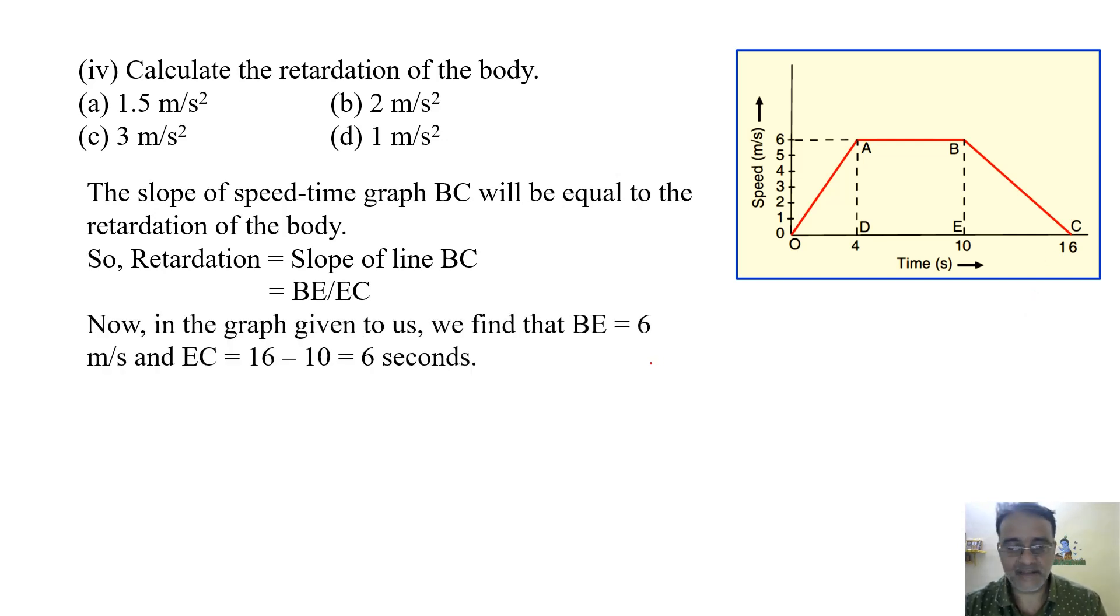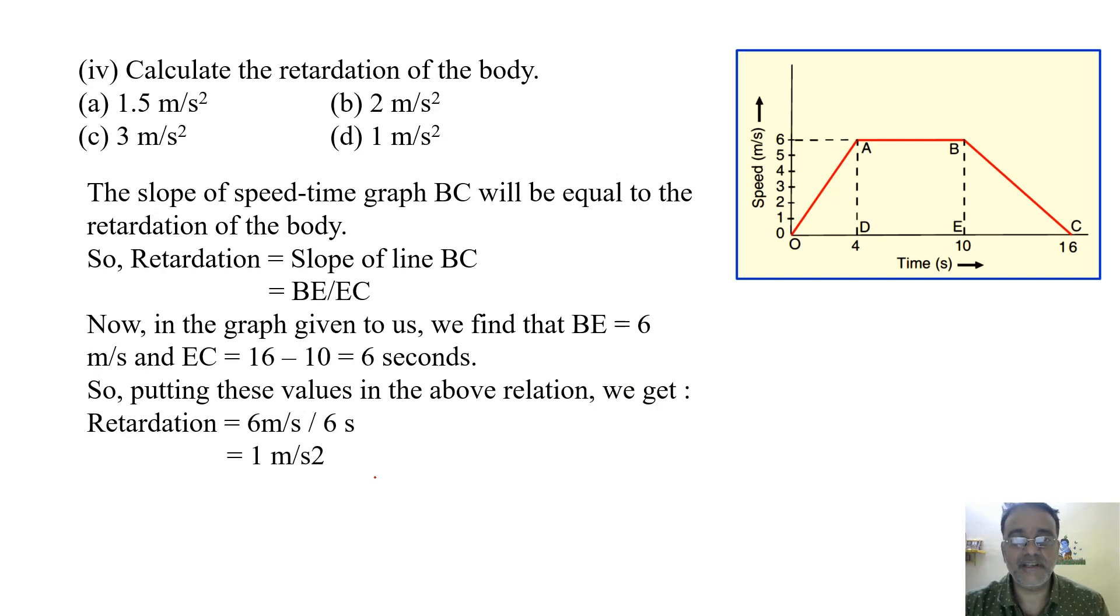So we will get 6 meter per second upon 6 second is the retardation, and we are getting 1 meter per second square. So the correct option is D. Already hum log yaha pe retardation bol rahe hain. Retardation means negative acceleration. So yaha pe actual mein ye jab value hum log use karte hain to negative mein use karte hain. But yaha pe kyonki retardation already mentioned hai, so we can write directly 1 meter per second square.